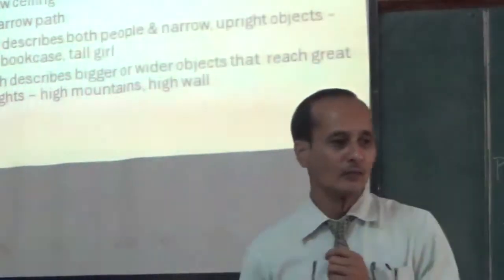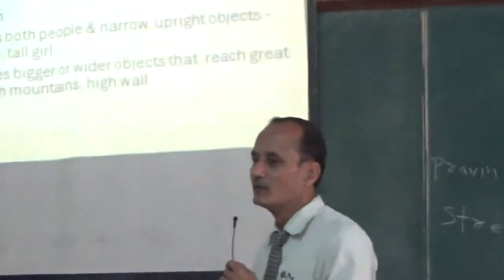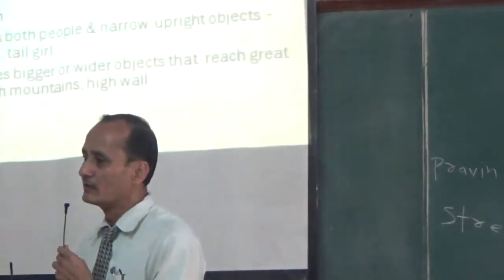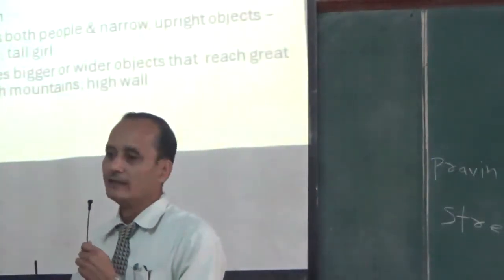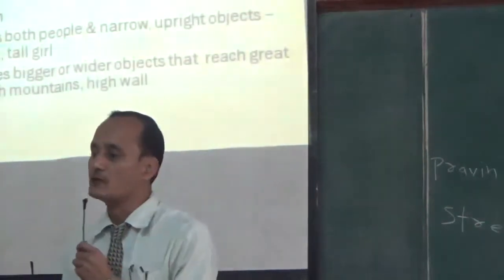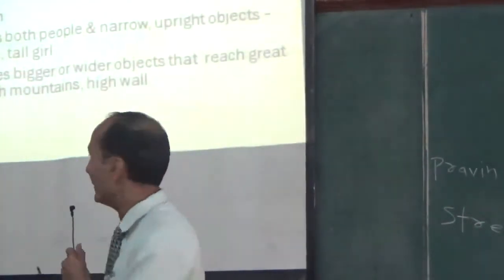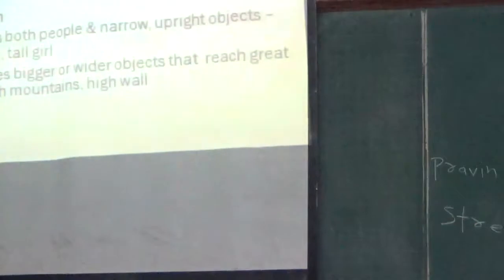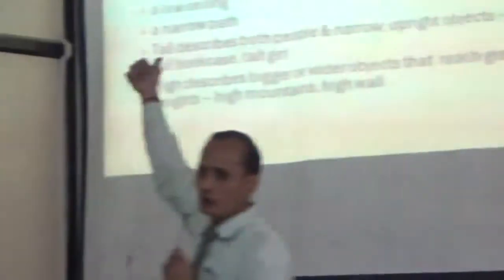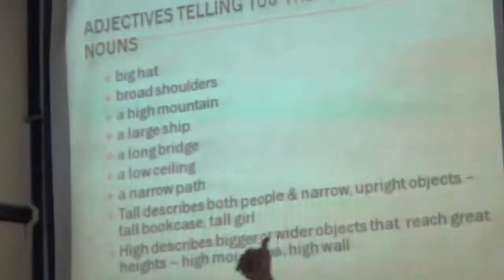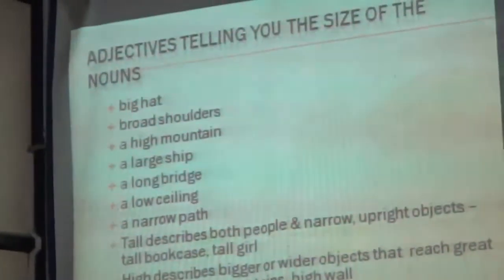So firstly we have adjectives of origin, then we saw adjectives of color, and before that we have seen adjectives of quality. Now let us see what is the next slide. Can you see your broad shoulders? Shoulders are described by the adjective broad. Let's go to the next slide.